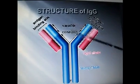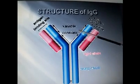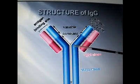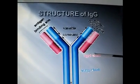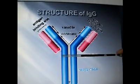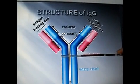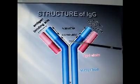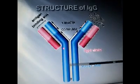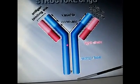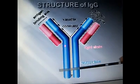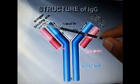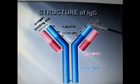Papain acts at the hinge region and gives us Fab, splitting both arms apart. Pepsin is another enzyme that reacts here to give us both arms together, which are called Fab prime 2. Here is the area where the Fc receptors attach. Antigen binds at the top of the antibody.